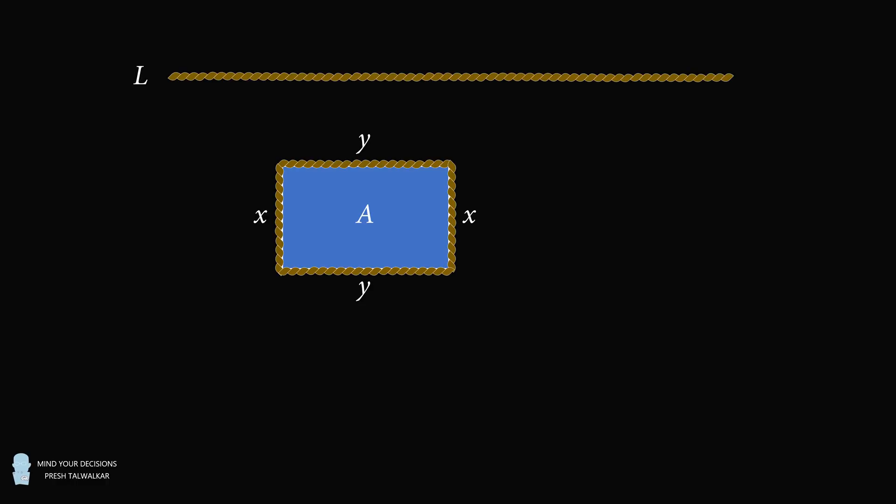So because the rope has length equal to L, we know the perimeter of the rectangle is equal to L. This means 2Y plus 2X is equal to L.